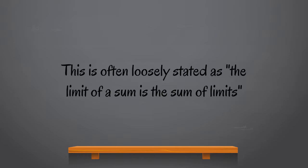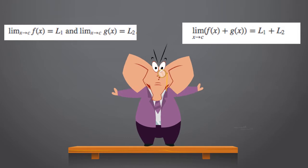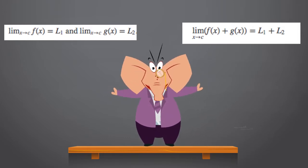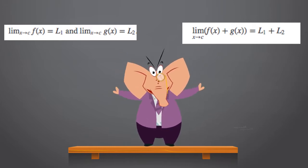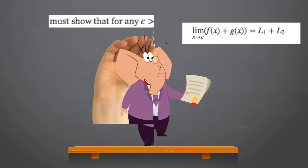Since we are working under an assumption that all of the limits above exist, let us suppose that limit x approaching c f(x) equals L1 and limit x approaching c g(x) equals L2. So we now hope to show that limit x approaching c [f(x) + g(x)] equals L1 plus L2.